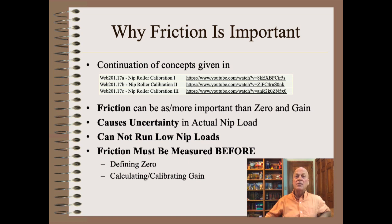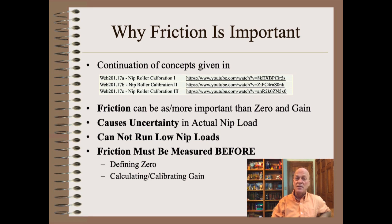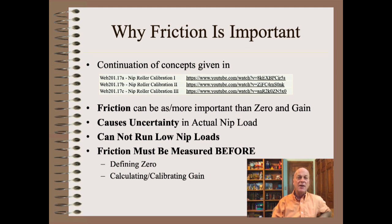In the last three clips, which I urge you to study first, we showed you how to calibrate zero and gain of systems with friction. We showed that friction causes uncertainty in actual nip load on the product. We also showed how friction prevents you from running low nip loads, else you risk bouncing off the product and possibly causing a crash. For these reasons, friction must be measured before you do anything else with the control system.